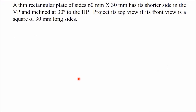Welcome. Today we will draw orthographic projections of another oblique plane. This plane is a rectangular plate of sides 60 by 30 mm, with its shorter side in the VP and inclined at 30 degrees to the HP. We have to project its top view if its front view is a square of 30 mm long sides.